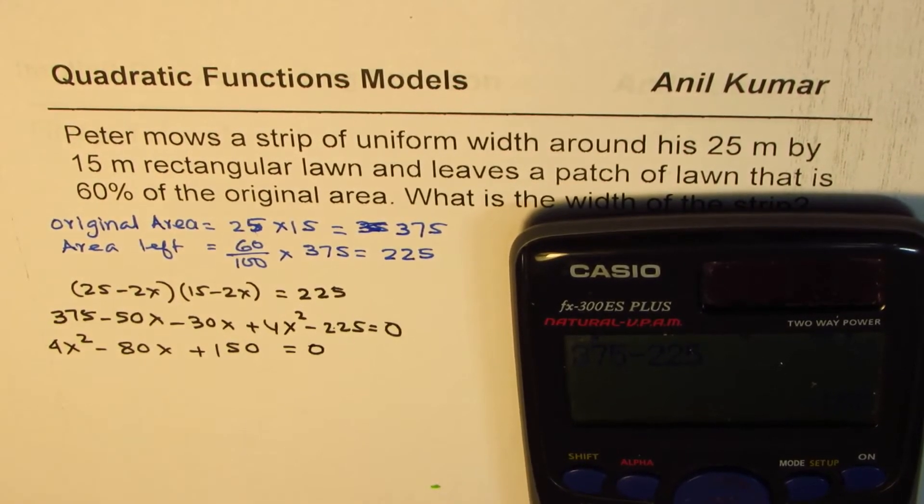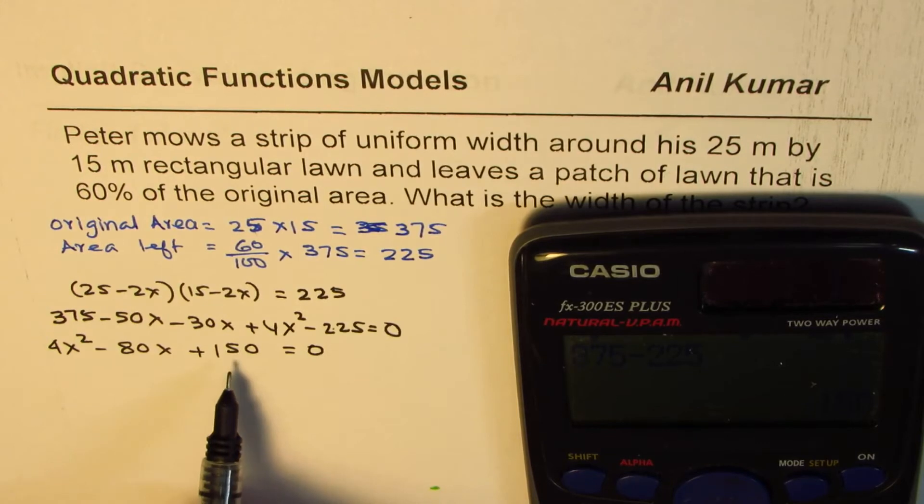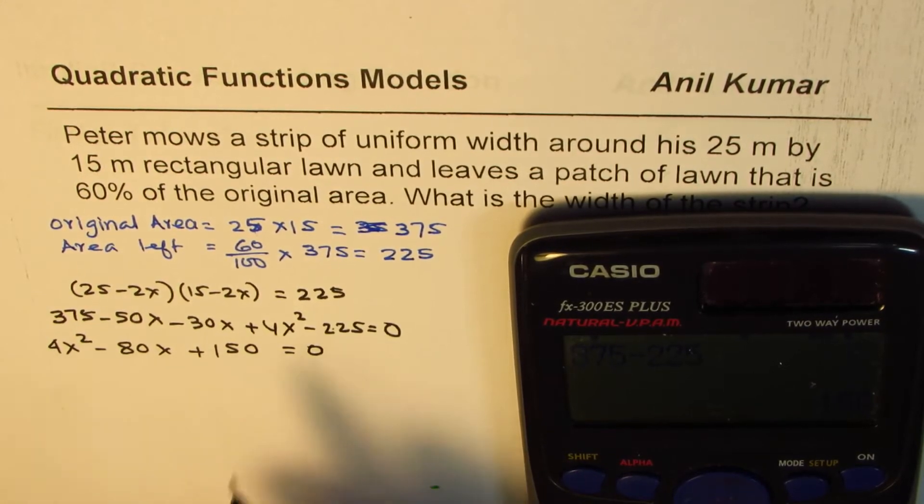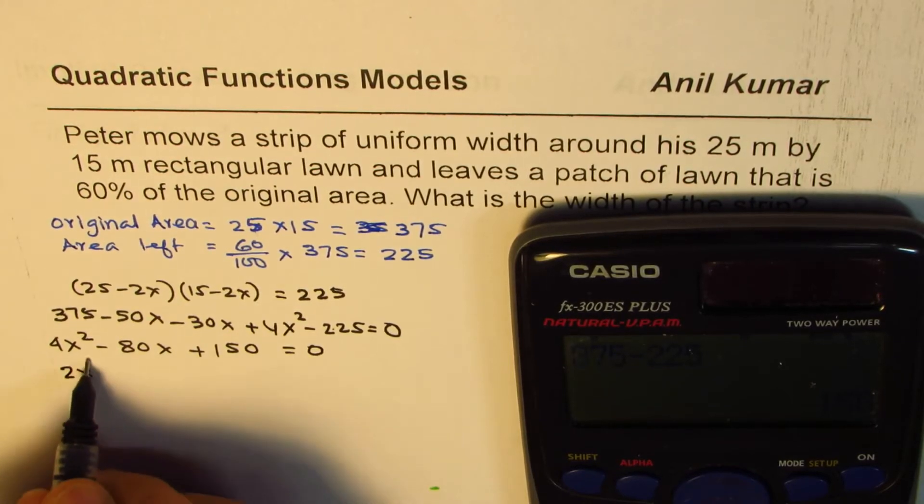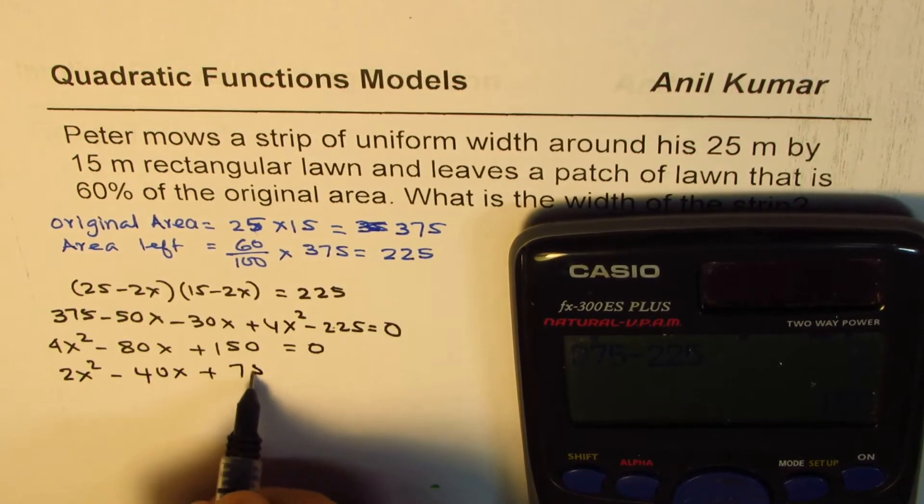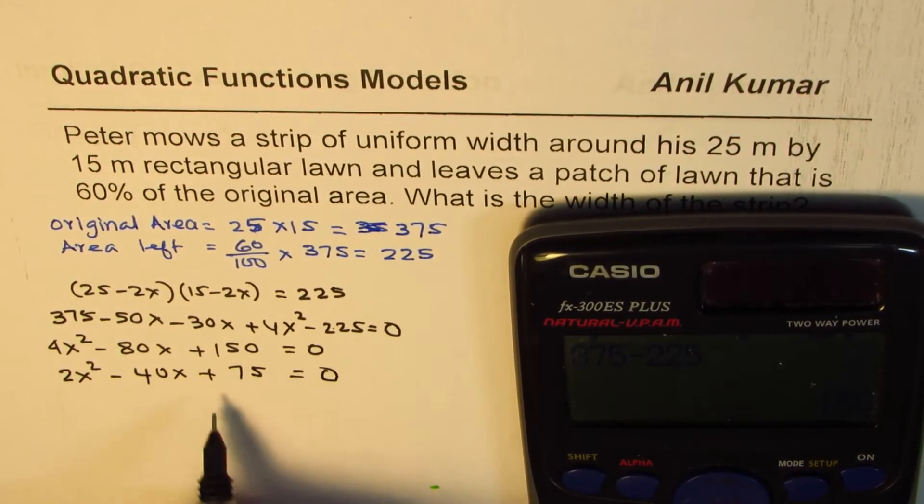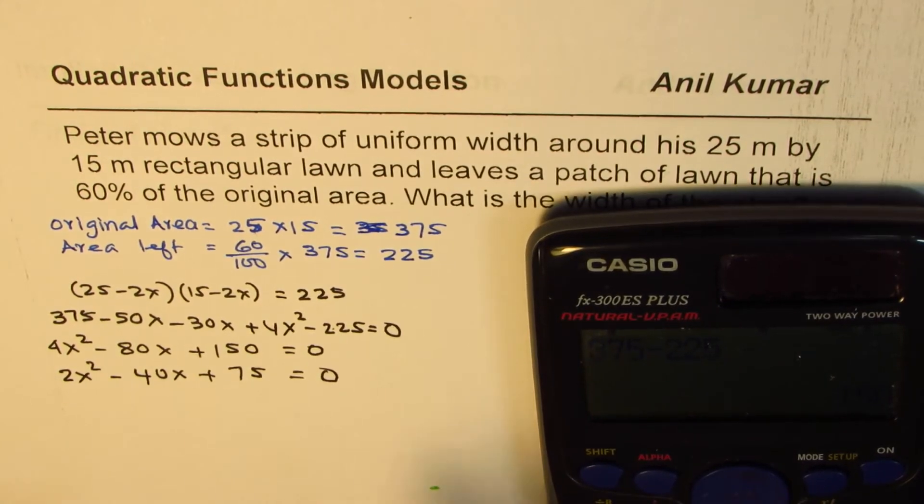Now you could simplify this. We can divide by 2, for example. That gives 2x² - 40x + 75 = 0. But there's no need because ultimately we are using calculator, and then from here we'll apply the quadratic formula.